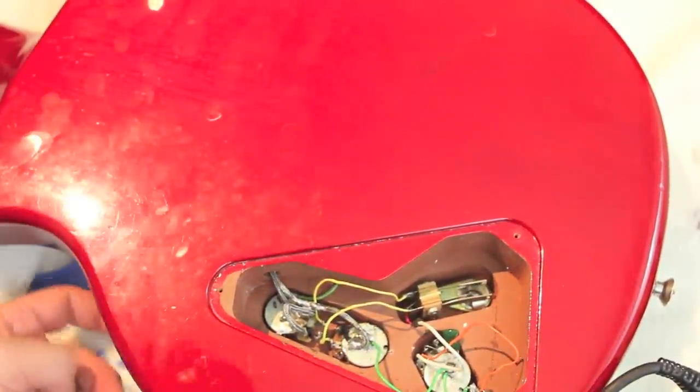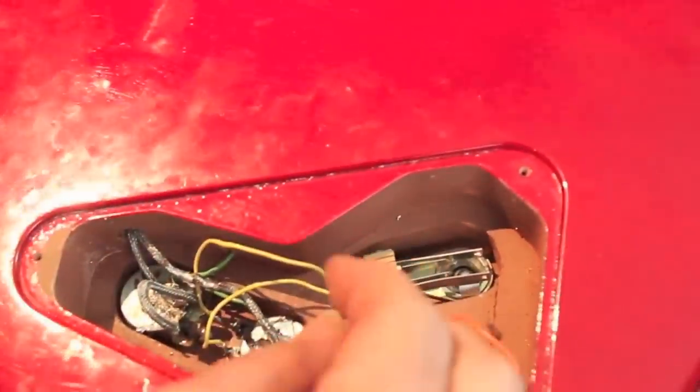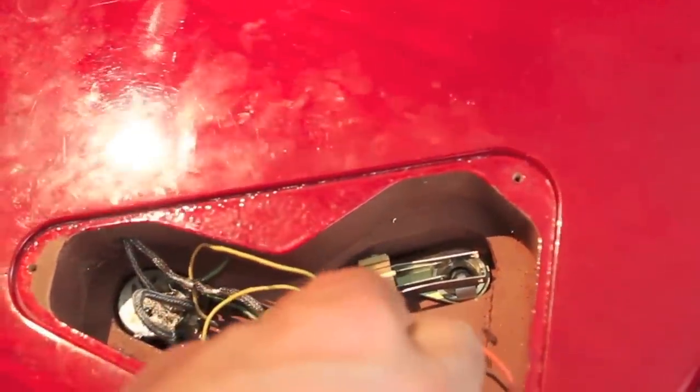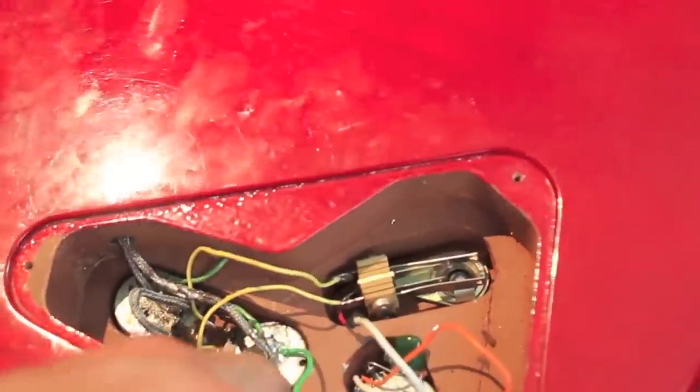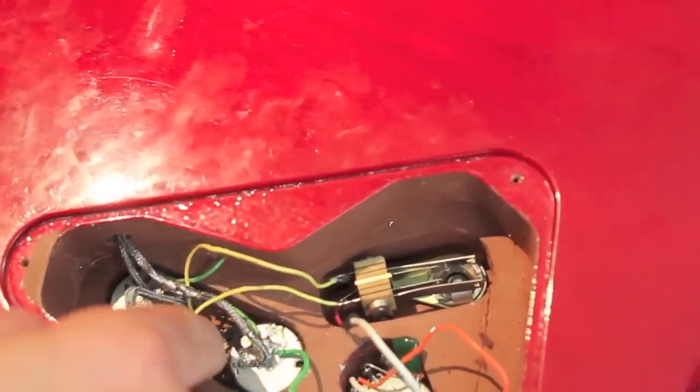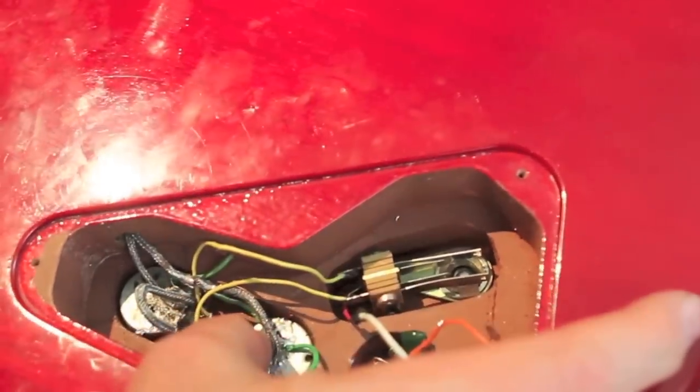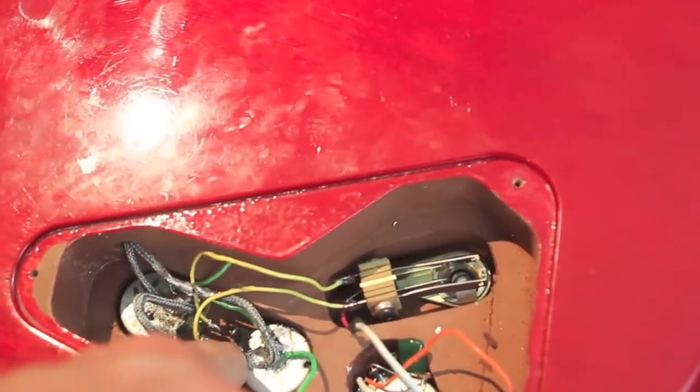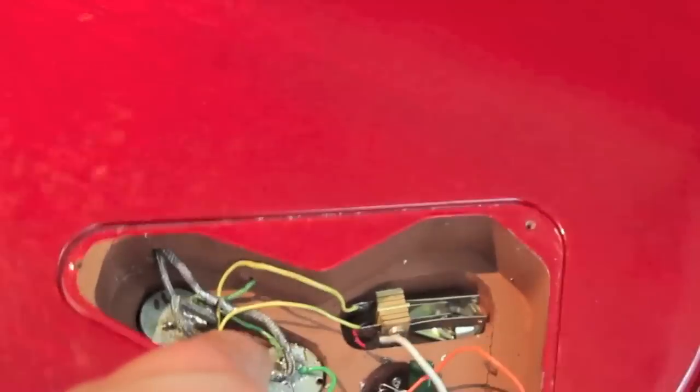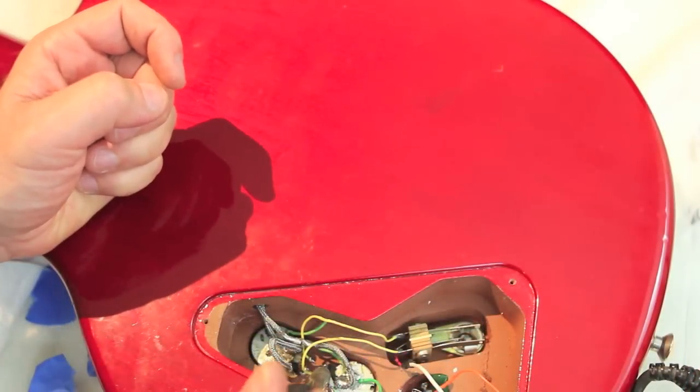If you haven't already done so, now is a great time to snap a picture of the before electronics. Now gently tug the pickup to identify its wire. Okay, now I can see that the hot wire is connected to one of the lugs of this middle volume pot, the bridge volume pot, and its outer mesh is soldered to the back of the pot.